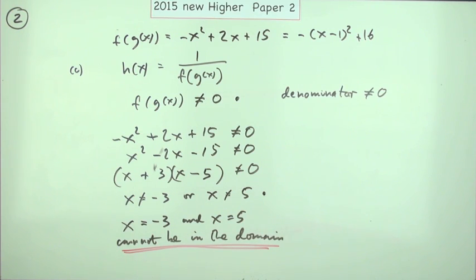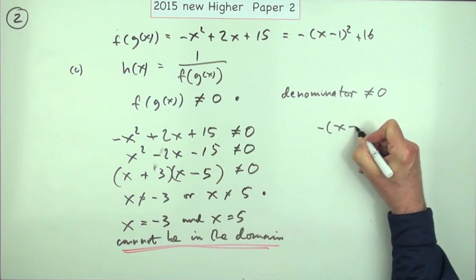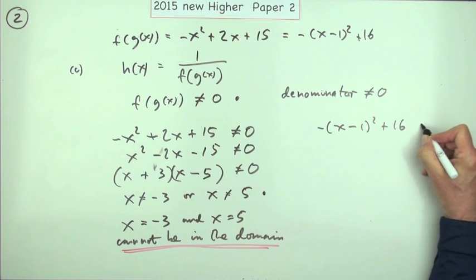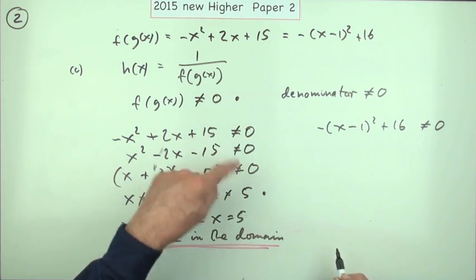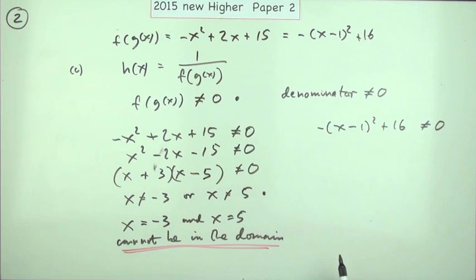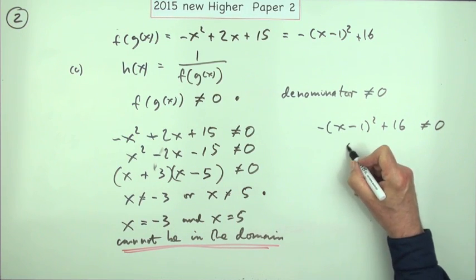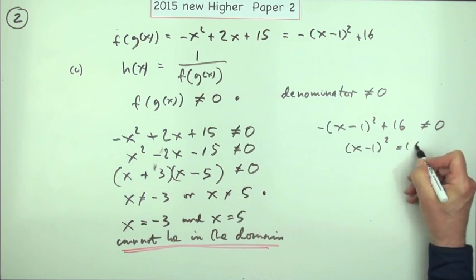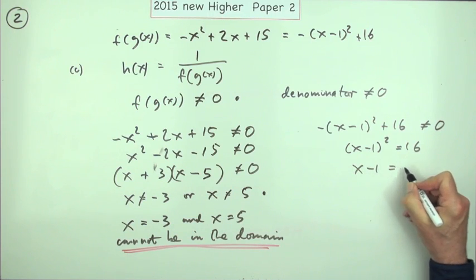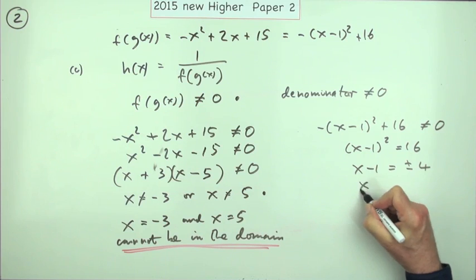What would this method have looked like? -(x-1)²+16 cannot be equal to 0, or you could just put equal to 0 in both of them and put something like 'not' at the beginning. That means (x-1)², taking that across as negative and then taking the negative across, makes that 16. That means x-1 is plus or minus 4. That means x is, taking the 1 across would be 1 plus or minus 4.